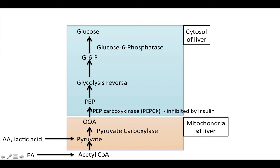Gluconeogenesis occurs mostly in the liver, but the first part happens in the mitochondria of the liver and then the second part happens in the cytosol of the liver. We start off with pyruvate. Acetyl-CoA is shown here just because it's converting to pyruvate — that's technically not part of gluconeogenesis. You have that long fatty acid chain that through beta oxidation produces acetyl-CoA, which can convert into pyruvate. Amino acids like alanine and lactic acid can also convert to pyruvate. Then oxaloacetate is one of the fates of pyruvate.